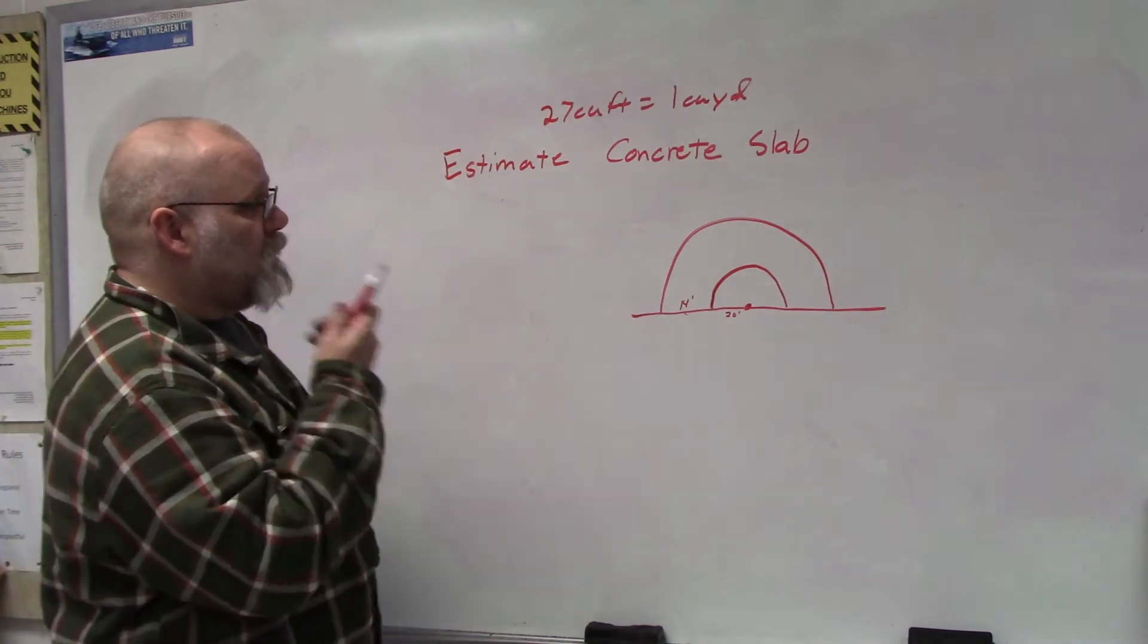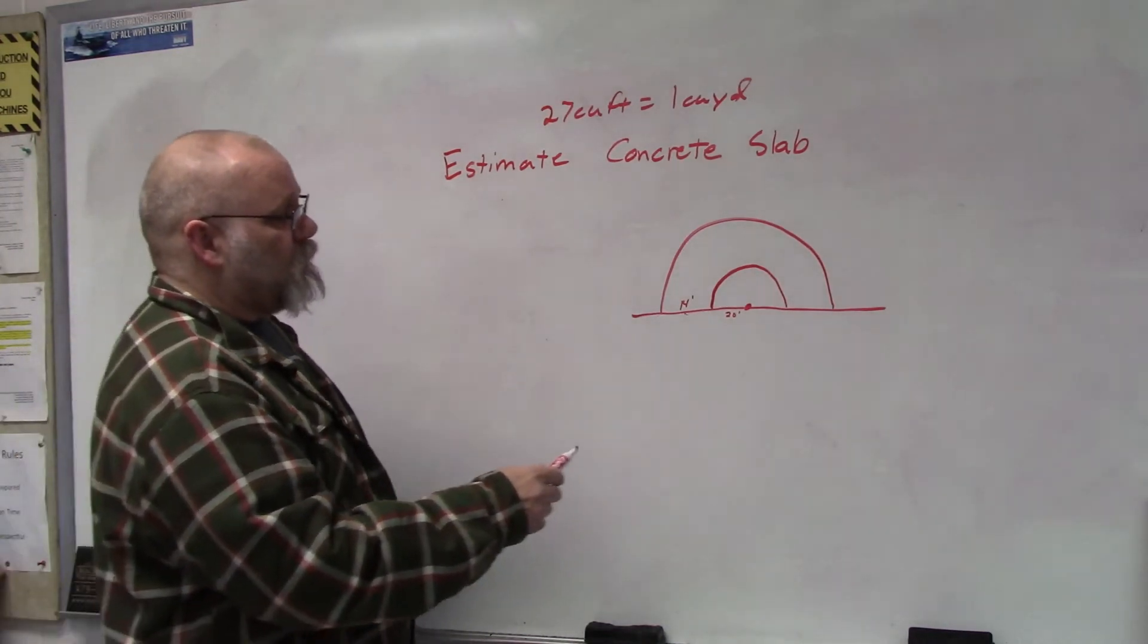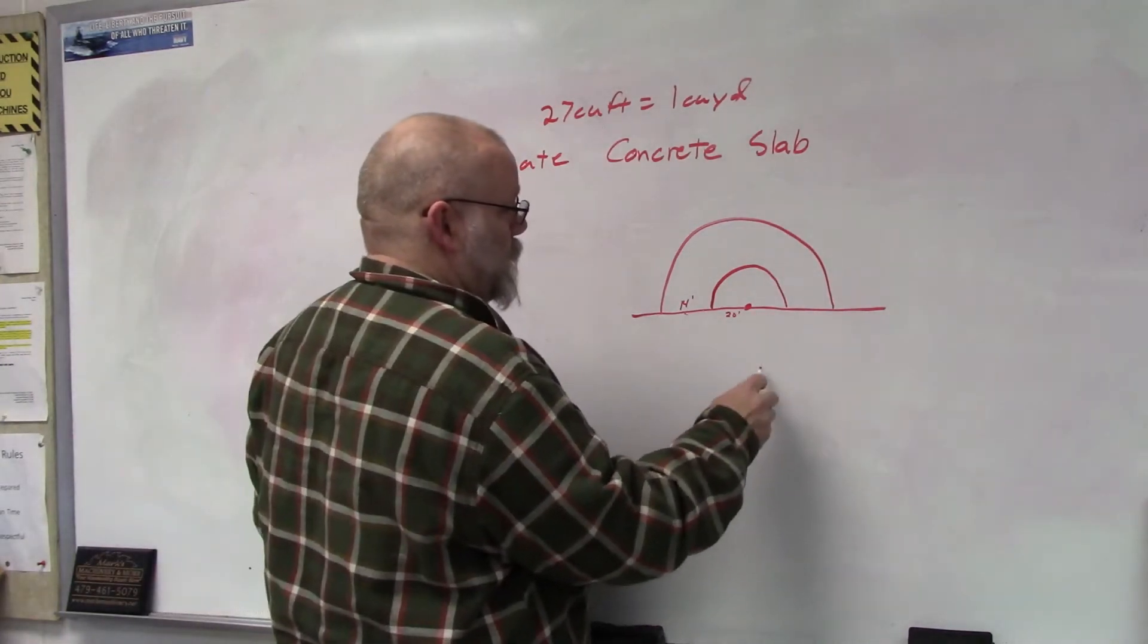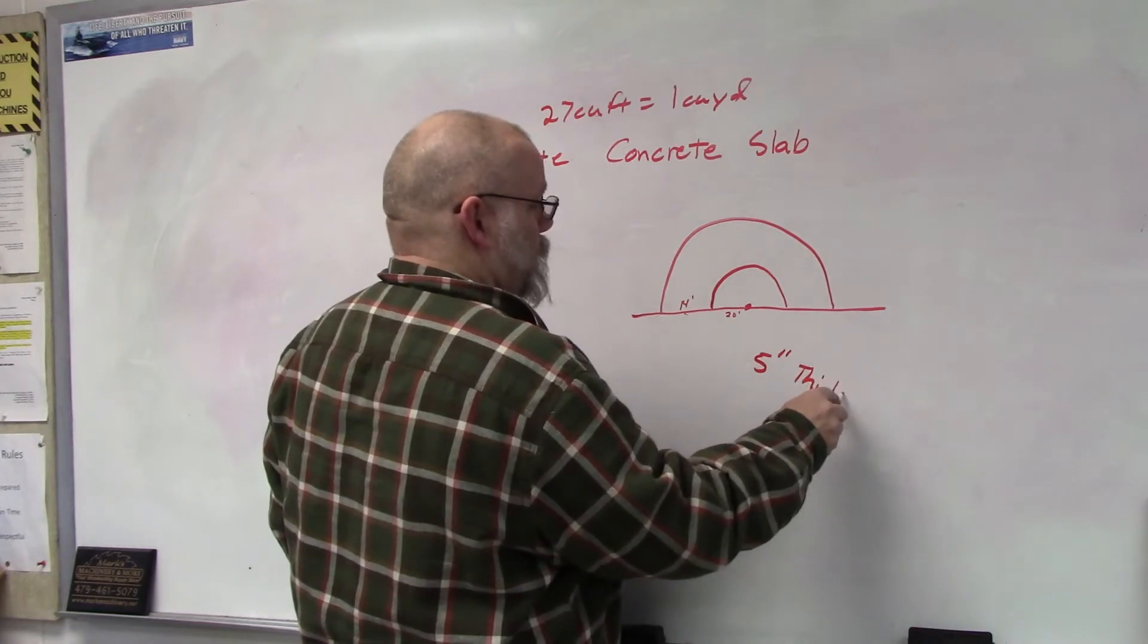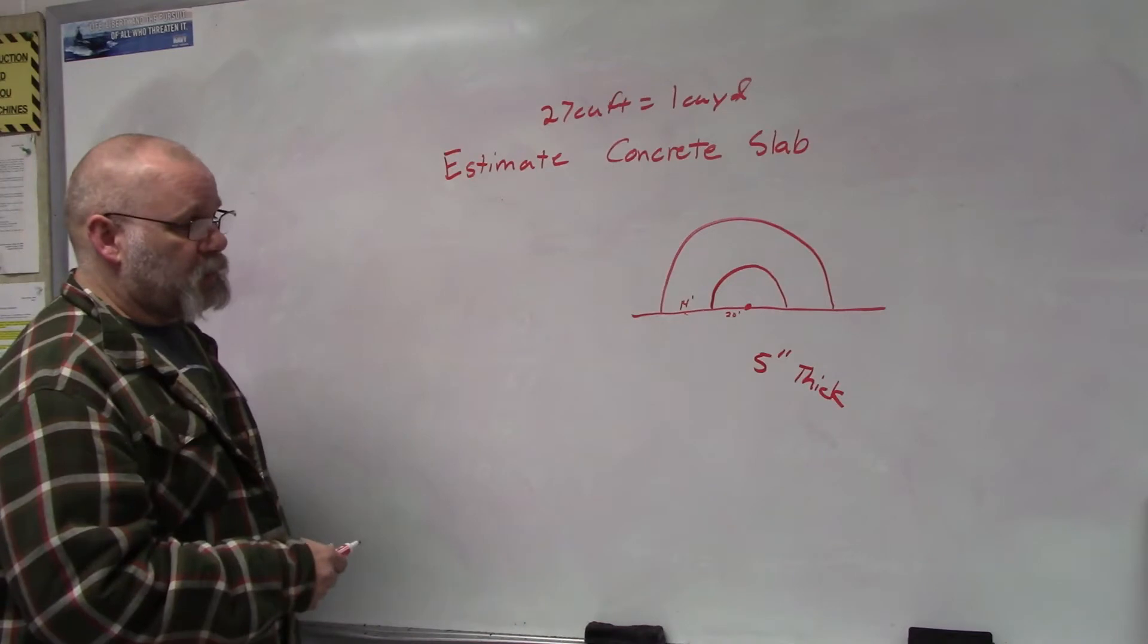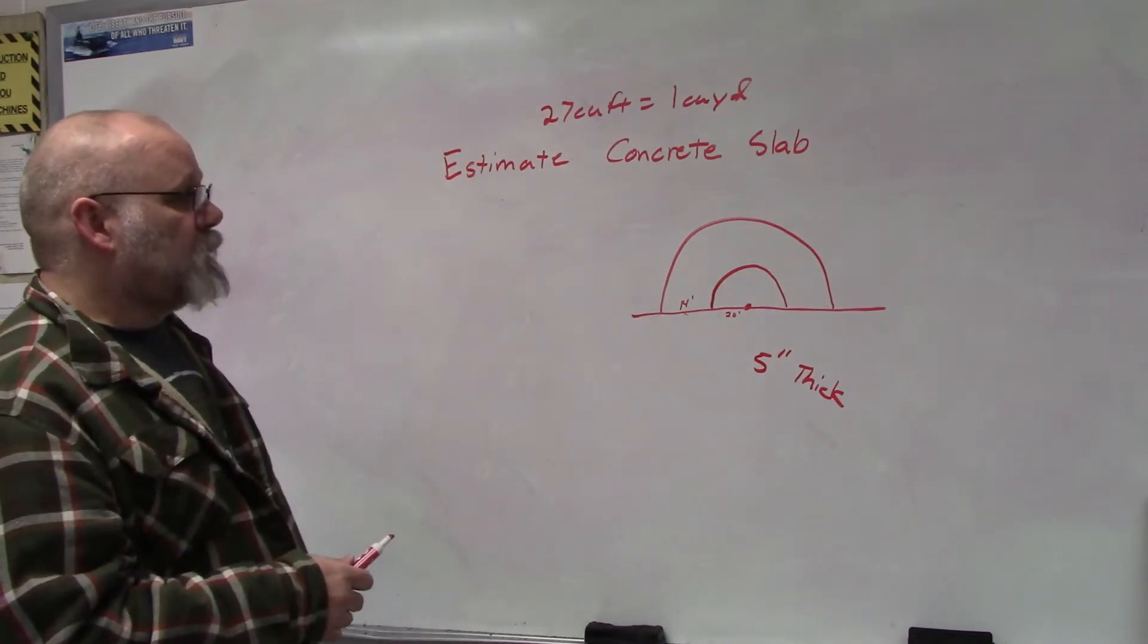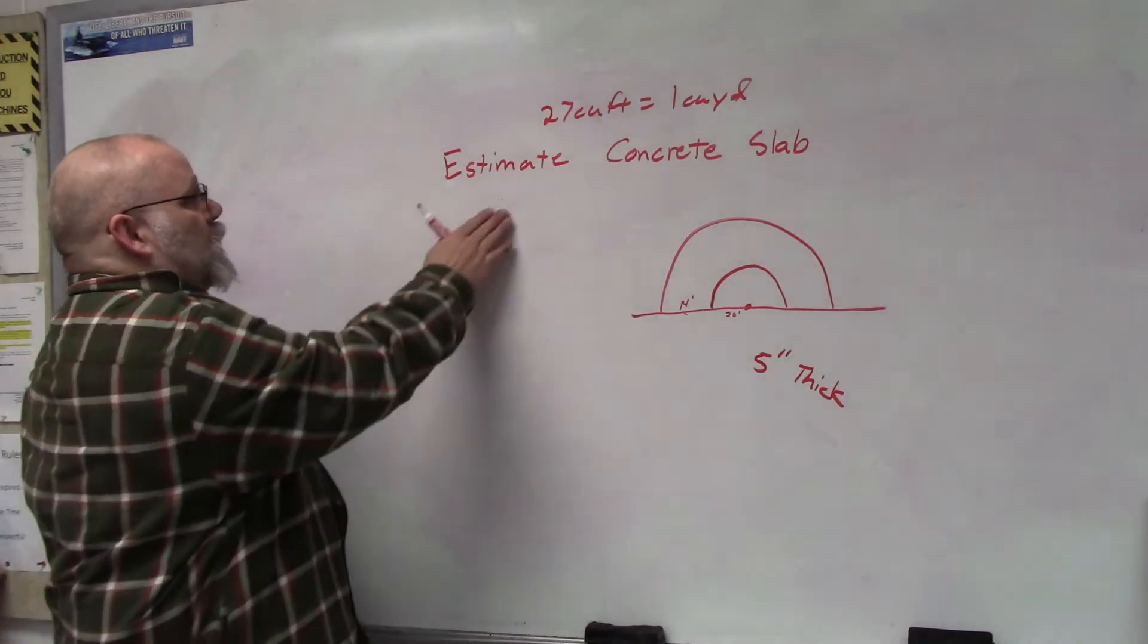We're going to make this driveway five inches thick and we're probably going to use 4,000 psi concrete. To figure this curved driveway out, we're going to find the area of the whole circle and subtract the inner circle.